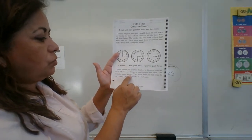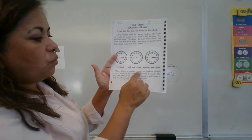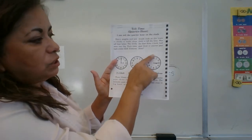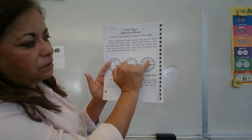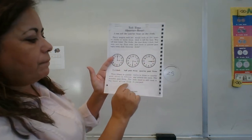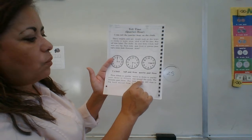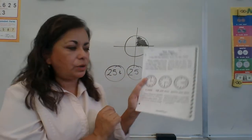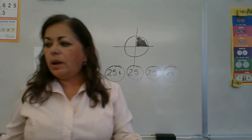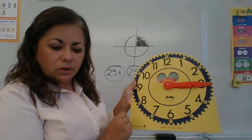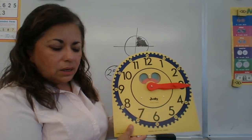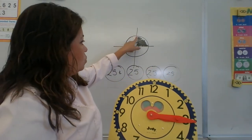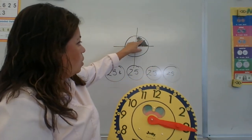Quarter past three, or 3:15, is 15 minutes past three. The big hand moved from 12 to 3, which is 15 minutes — remember we count by fives: five, ten, fifteen. That's a quarter of the way around the circle. The little hand is still close to three, or just past three, so it's a quarter past. It's only one out of four parts of the circle.